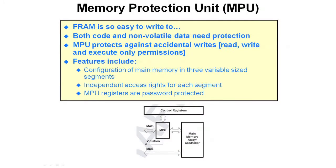Unlike most MSP430s, the FRAM series of parts has a memory protection unit. The FRAM is so easy to write to that both code and non-volatile data need protection. The memory protection unit can protect against accidental writes by enforcing read, write, and execute-only permissions. You can configure main memory in three variably-sized segments with independent access rights for each. The MPU registers are password protected, and any violation of access rights generates a fault and puts you into the fault handler on the processor.